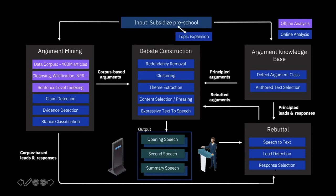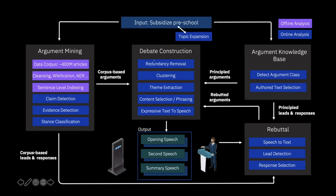We also have the rebuttal component. The goal is to listen to human debaters' speech, capture the main points raised by the human debater, and come up with possible rebuttal arguments. Finally, the middle component — debate construction — takes the output from the other three components as input, removes redundant arguments, clusters them, and extracts meaningful content. We then use discourse planning to construct meaningful statements and run text-to-speech to produce the output.